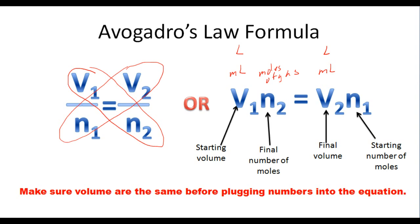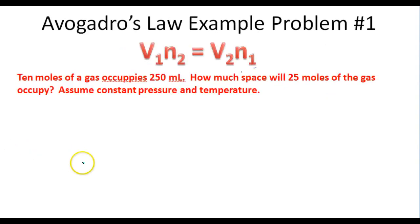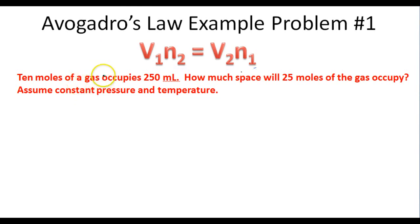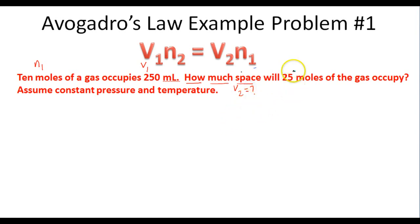Let's take a look at a few problems using Avogadro's Law. In this first problem, 10 moles of a gas occupies 250 milliliters. How much space will 25 moles of the gas occupy, assuming constant pressure and temperature? So 10 moles is the starting number of moles N1, 250 milliliters is the starting volume V1, and 25 moles is the final number of moles N2. We want to solve for V2.